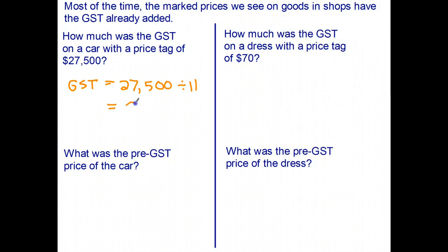Therefore the pre-GST price is just $27,500 subtract $2,500, and the amount that the retailer is going to collect from the customer is $25,000.